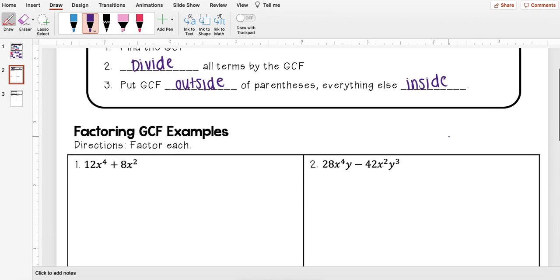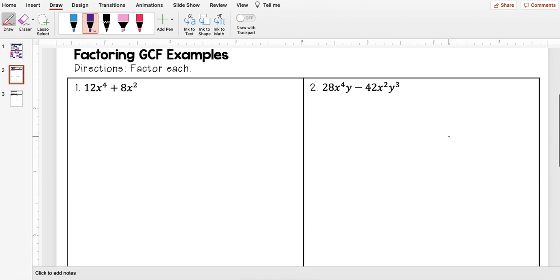So let's go through some examples. First one I have 12x to the fourth plus 8x squared and I want to factor this. So factoring just means I want to rewrite this so that it's the factors, what multiplies to get to 12x to the fourth plus 8x squared.